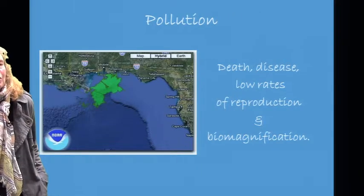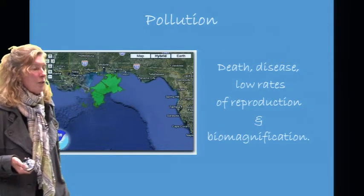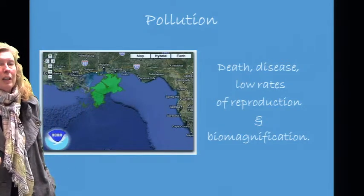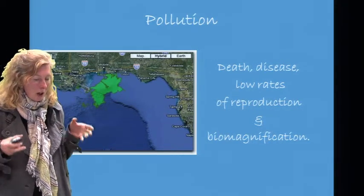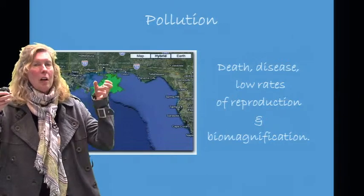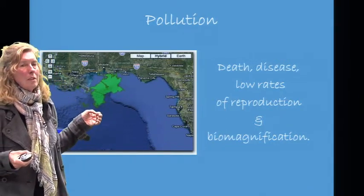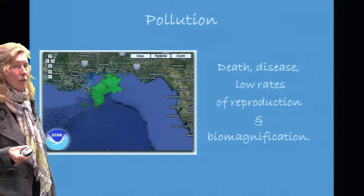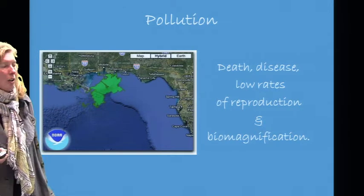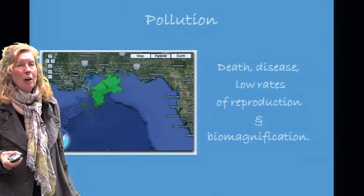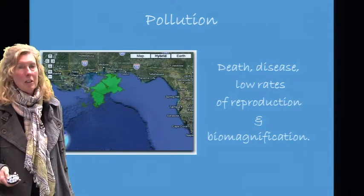With pollution, often death, disease, low rates of reproduction, and biomagnification are seen — biomagnification being where toxins run up the food chain. A satellite image shows the Gulf of Mexico and the oil spill that occurred a few years back; they are still feeling ramifications from that spill.